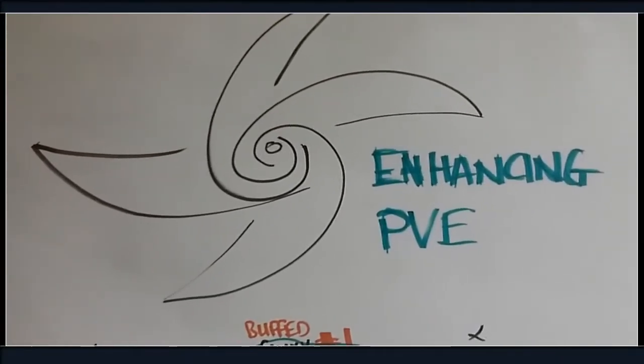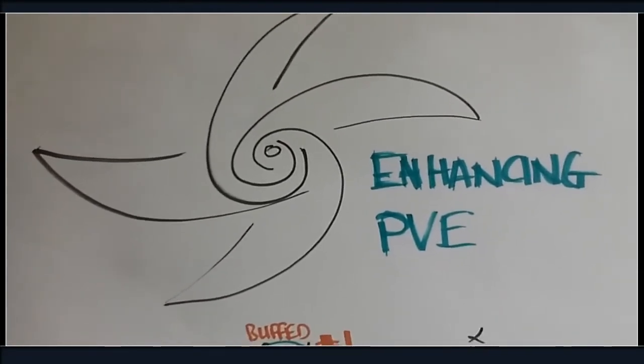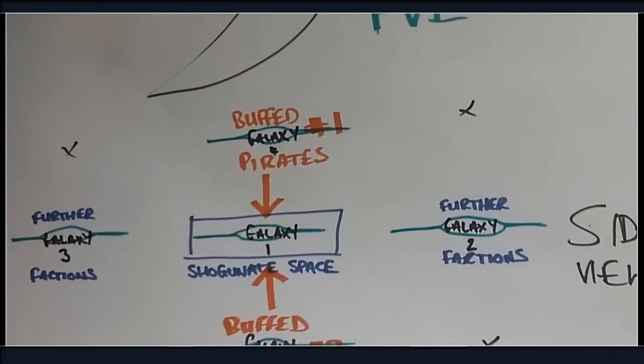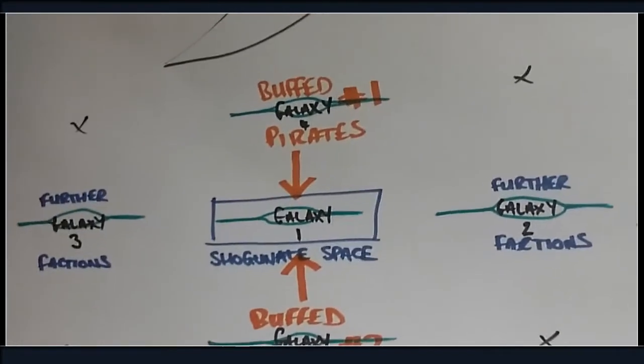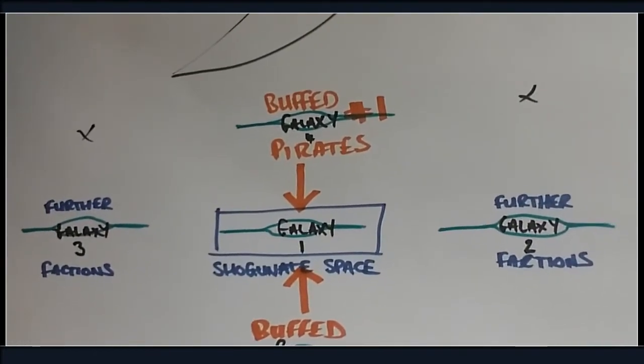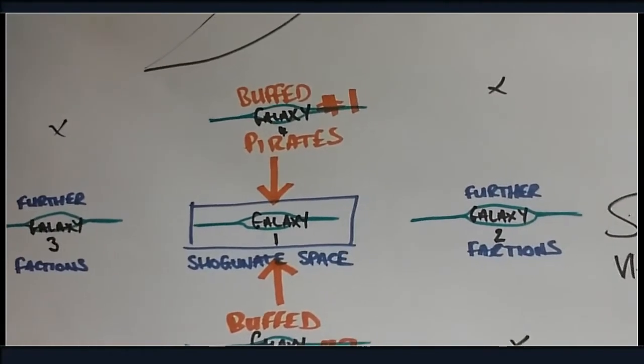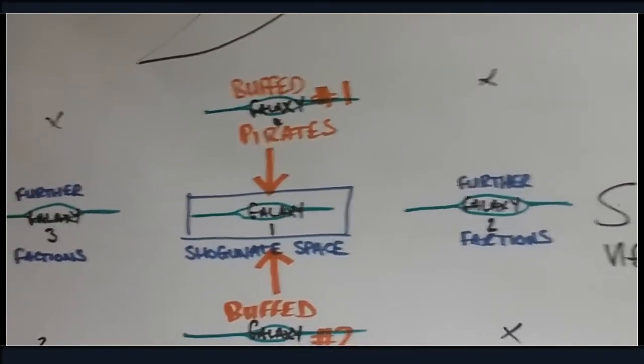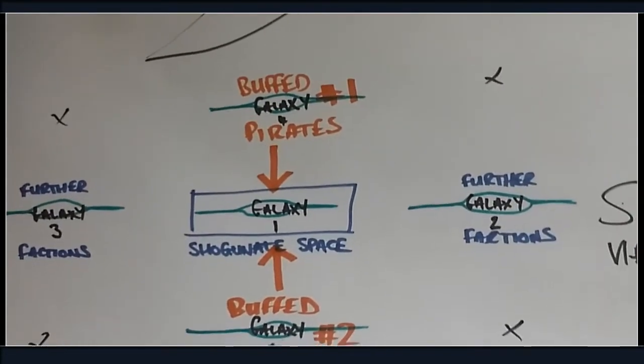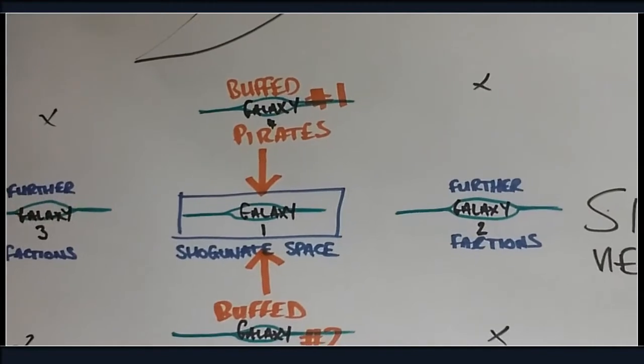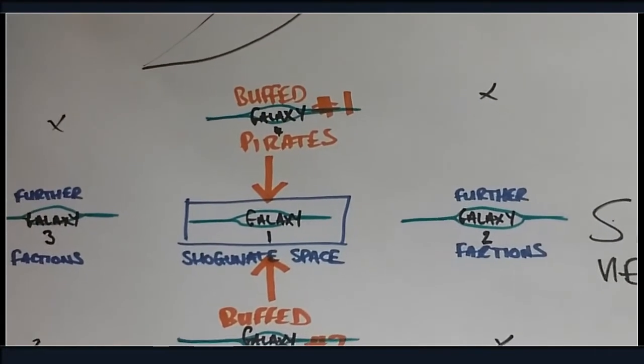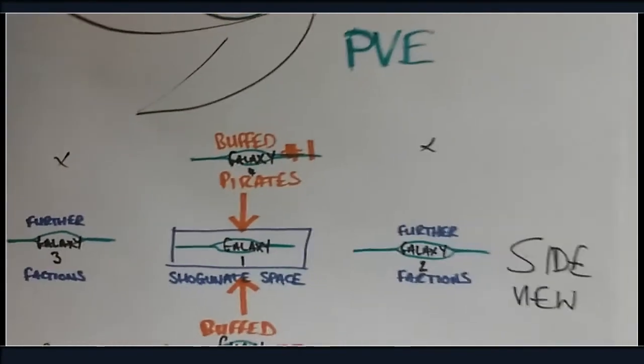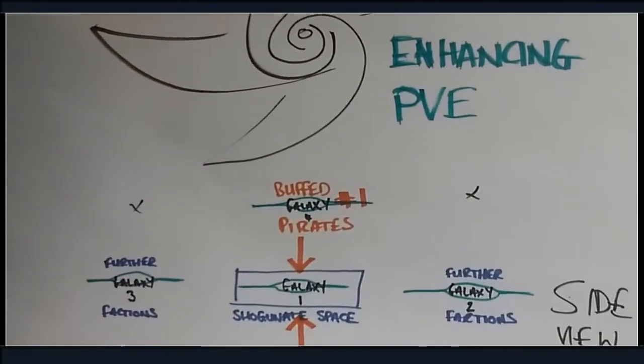Okay so this is about enhancing PVE as you can see my really badly drawn galaxy there. We're going to be taking a side view of the universe and each of these little green eggs is basically a galaxy. Now as you can see there above and below we have buffed pirates number one and number two. Those will be the first to go in. They will be non-spawning pirates that will only exist in the galaxies above and below the first Shogunate galaxy. So if you want to expand that's what will happen. Further players will be putting things in for us to buff out the four galaxies that go around the Shogunate as well because we wanted to make it if you want to leave the galaxy you're going to find yourself a challenge and there will be server events where people will fleet up to get that done.